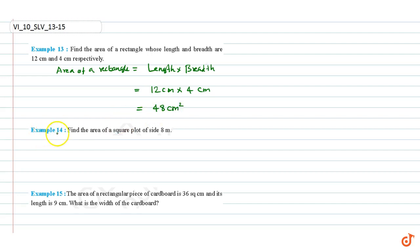Example 14: Find the area of a square plot of side 8 meters. We know that area of a square equals side times side. This equals 8 meters times 8 meters.